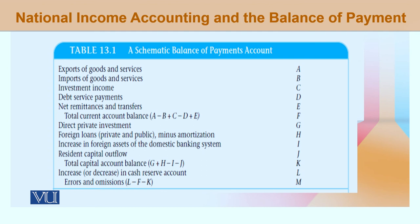یہ current account balance ہے۔ Equational form میں اسے F کا نام دیا گیا ہے جس میں پانچ entries ہیں: A minus B — جہاں A exports of goods and services ہے اور B imports of goods and services ہے۔ C investment income ہے جو plus sign کے ساتھ ہے۔ D debt servicing outflow ہے جس کے ساتھ negative sign ہے۔ Plus E جو remittances کو show کر رہا ہے، positive sign کے ساتھ۔ یہ پانچ variables مل کر current account balance بناتے ہیں۔ اس کے بعد capital account میں transactions discuss ہوتی ہیں۔